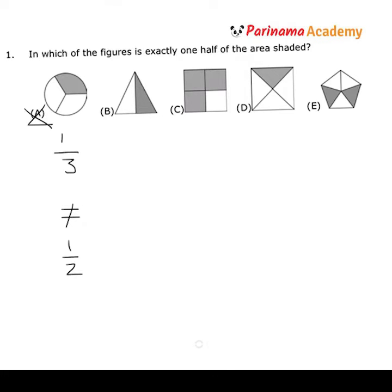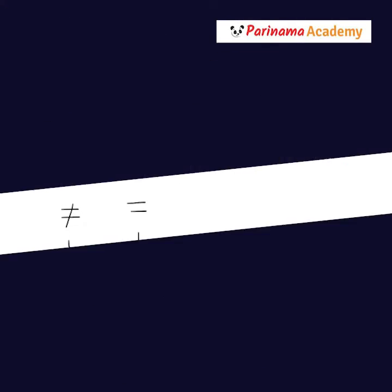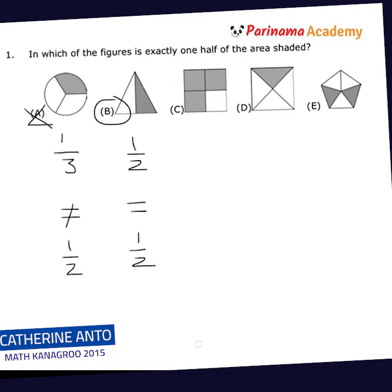For B, I see that the triangle is split up into two equal parts, and one of them is shaded, and one half is equal to one half. So that means B should be the answer. But let's look at C, D, and E just to clarify that.